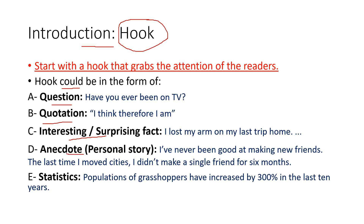It could be an anecdote — a personal story. For instance: 'I've never been good at making new friends. The last time I moved cities, I didn't make a single friend for six months.' This is a personal story about the topic you're going to discuss. Your hook could be the first one, two, or three sentences, but do not exceed three sentences — otherwise it may make readers feel bored. It could also be statistics, which will be interesting and surprising. For example: 'Populations of grasshoppers have increased by 300% in the last 10 years.' Your hook must be directly related to the topic or theme you are going to deal with in your essay.